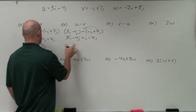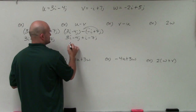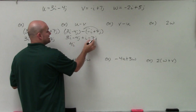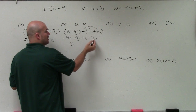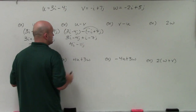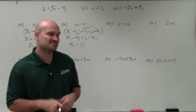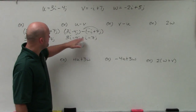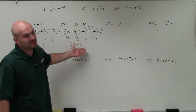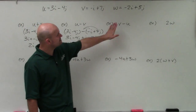Now I can just combine like terms. 3i plus i is going to be 4i. Negative 4j minus 7j — if you owe me $4 and you borrow seven more dollars, you now owe me $11. When you combine like terms, you combine the coefficients and leave the variable, in this case j, exactly the same.